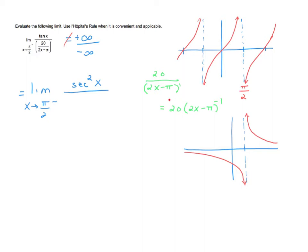To differentiate, I bring the negative one down front and multiply it by 20, copy down the inside (2x minus pi), subtract one from the exponent to get negative two, then by the chain rule multiply by the derivative of the inside. The derivative of 2x is 2 and of pi is 0, so I multiply by 2. Multiplying the numbers together gives negative 40 times (2x minus pi) to the negative 2.